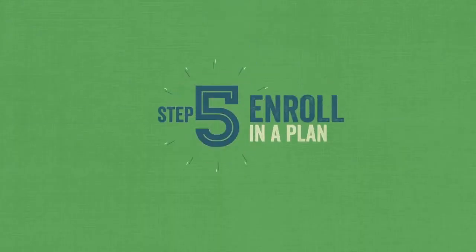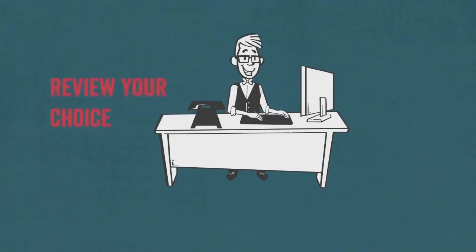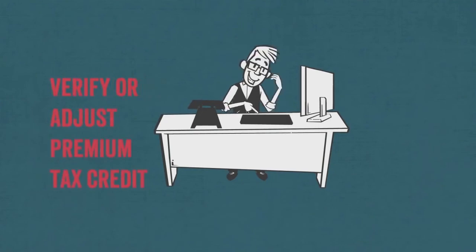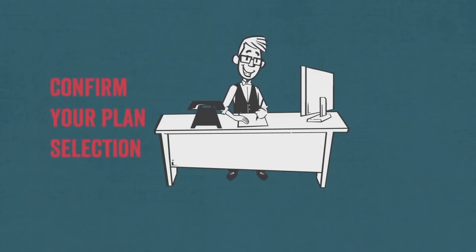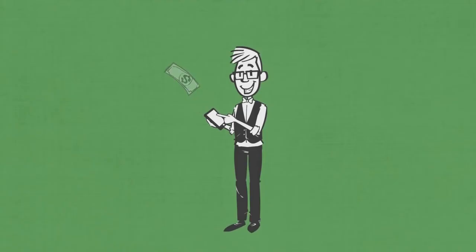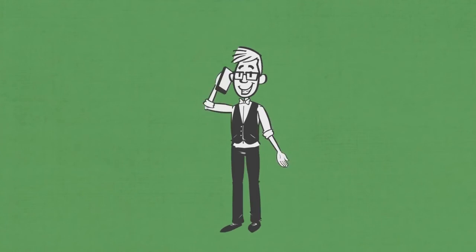Step five, enroll. When you enroll, you'll review your choice, verify or adjust any premium tax credit you may want to use now to lower premium costs, and confirm your plan selection. You should make sure to pay your first premium and contact your plan to confirm your enrollment.